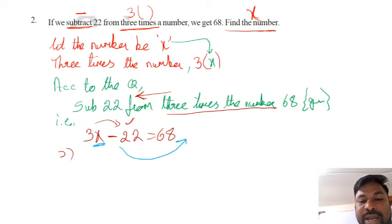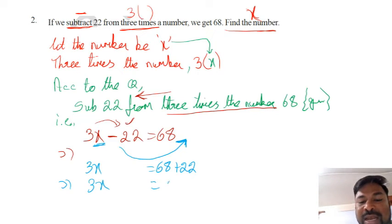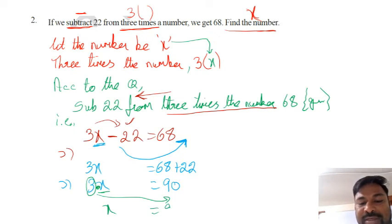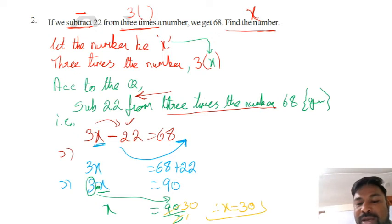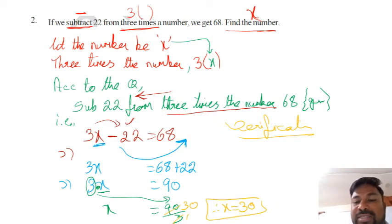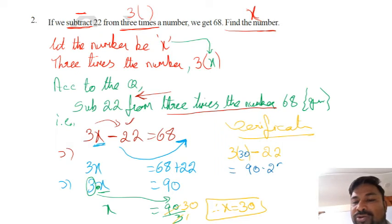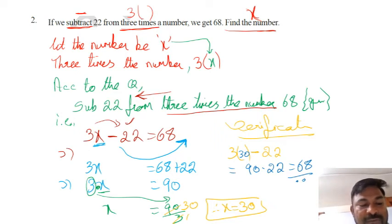Transform −22 to the other side: 3x = 68 + 22 = 90. Now x is multiplied by 3, so divide: x = 90 ÷ 3 = 30. The required number is 30. Verification: 3 times 30 is 90, minus 22 equals 68. Verified.